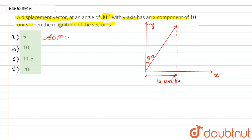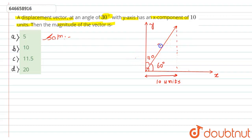Now, the complete angle between x and y is 90 degrees, so this angle becomes 60 degrees. That means the vector makes an angle of 60 degrees with respect to the x-axis. Let's suppose the magnitude of the vector is r, which we have to find.